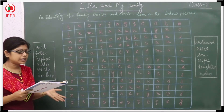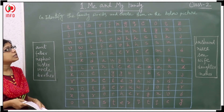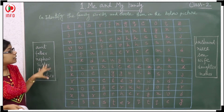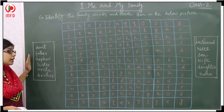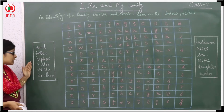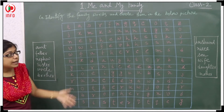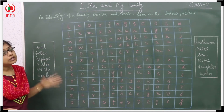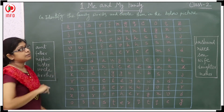Now have a look here — the C-Bit. Identify the following words and circle them in the below picture. Here the words are given inside the box: aunt, father, nephew, sister, uncle, brother, husband, niece, son, wife, daughter, mother. These all words are there — you have to find them out from this table.